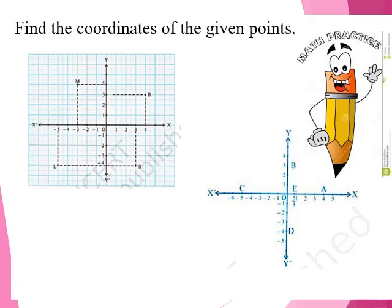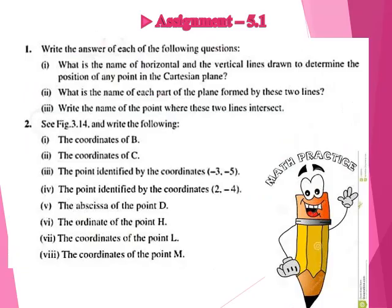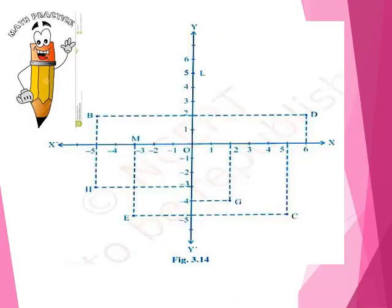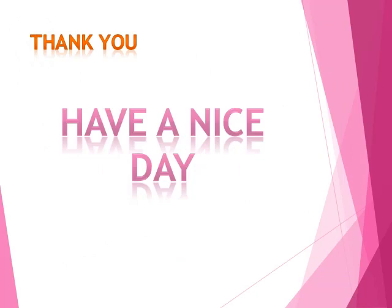You have to find the coordinates of the given points in both directions — many points are given. Here is a small assignment for you. Today we have learnt about the Cartesian system. I hope you have clear ideas and better comprehension of the topic. I explained all the points in detail. Try honestly to solve the assignment. Comment, thank you, and have a nice day.